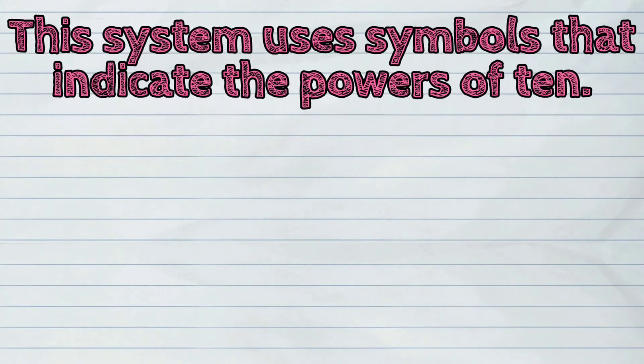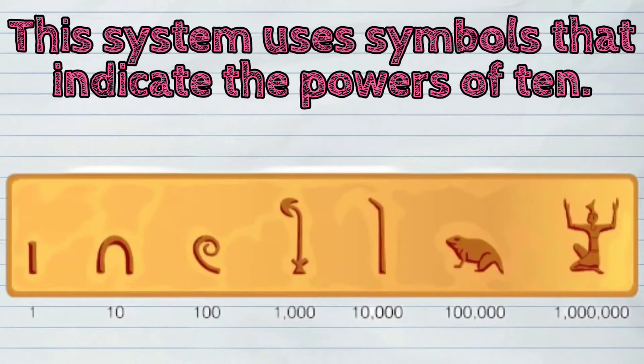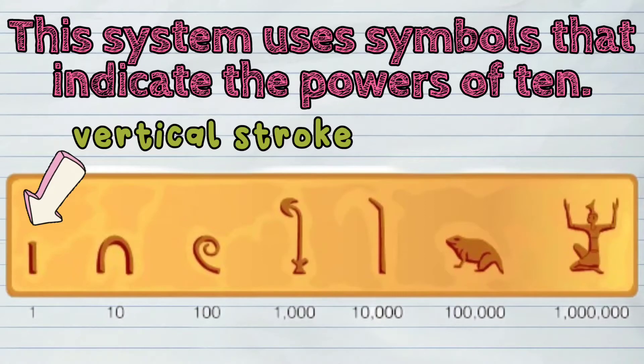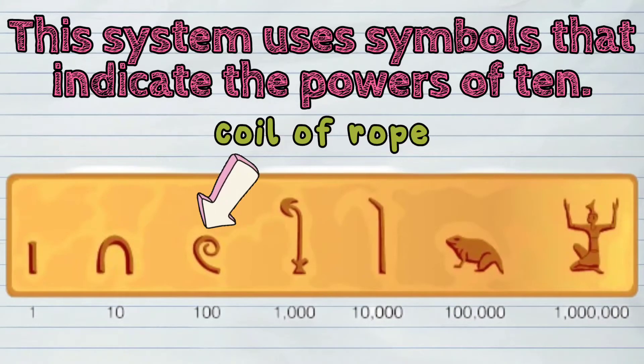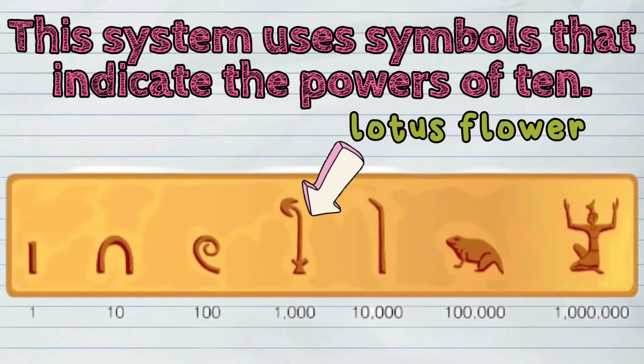This system uses symbols that indicate the powers of 10. They use a vertical stroke to represent 1, a heel bone arch to represent 10, a coil of rope to represent 100, and a lotus flower for 1,000.